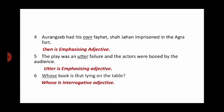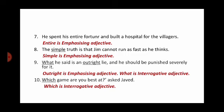'Aurangzeb had his own father Shah Jahan imprisoned in the Agra Fort' — 'own' is an emphasizing adjective because it is his own father. 'The play was an utter failure and the actor was booed by the audience' — 'utter' means complete failure, so 'utter' is an emphasizing adjective. 'Whose book is that lying on the table?' — 'whose' is an interrogative adjective. 'He spent his entire fortune and built a hospital for the villagers' — 'entire' is an emphasizing adjective.